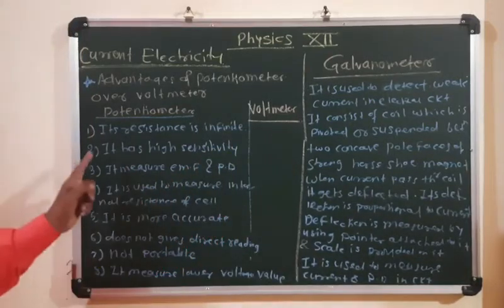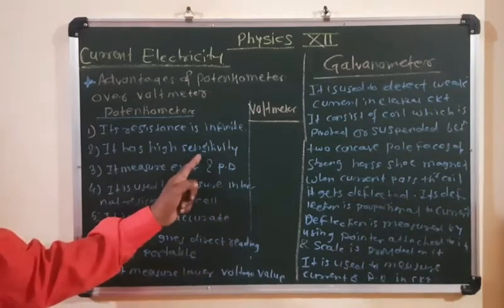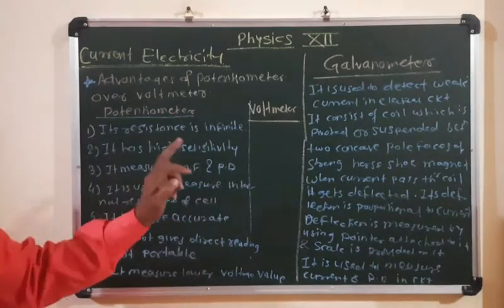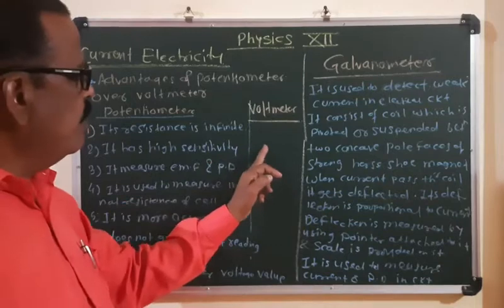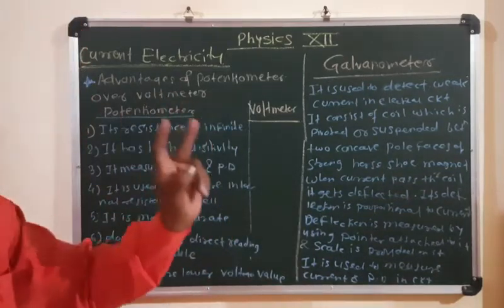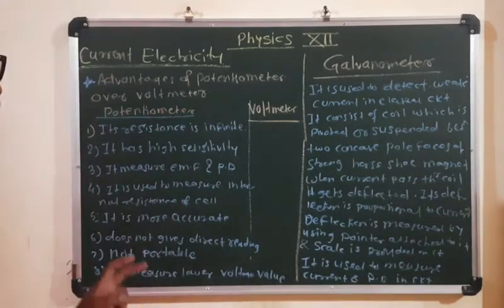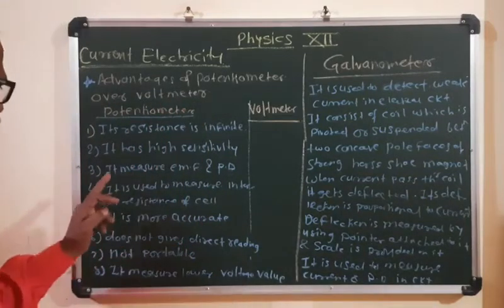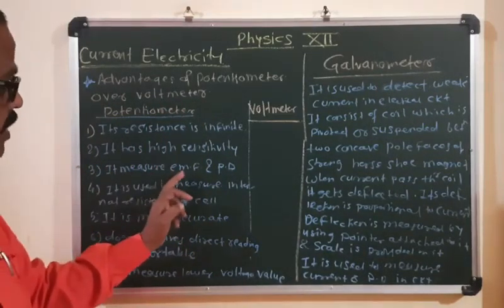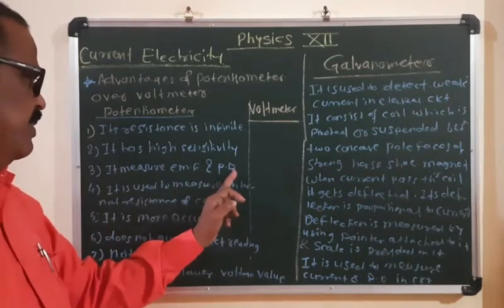The second advantage is that potentiometer has high sensitivity. The sensitivity of voltmeter is less as compared to potentiometer. The third advantage is that potentiometer measures both the electromotive force and potential difference.